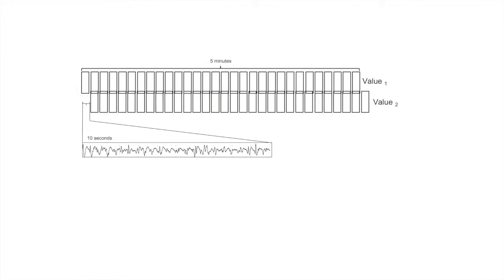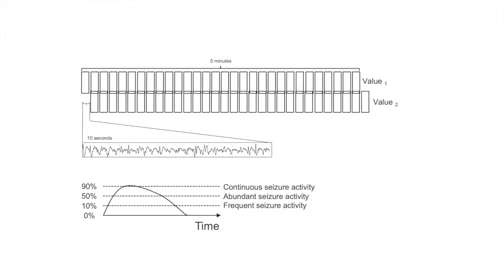After 10 seconds, it will do it for the next five minutes — so it's a rolling window. Every 10 seconds it's moving forward, giving you value after value. If these values are plotted as a line graph, you will see the values going up or down. We have also identified thresholds of 10, 50, and 90% to identify frequent, abundant, or continuous seizure activity, consistent with the recommendations made by the American Clinical Neurophysiology Society.